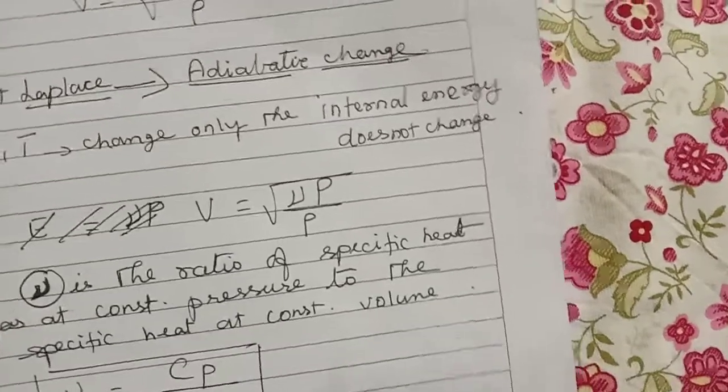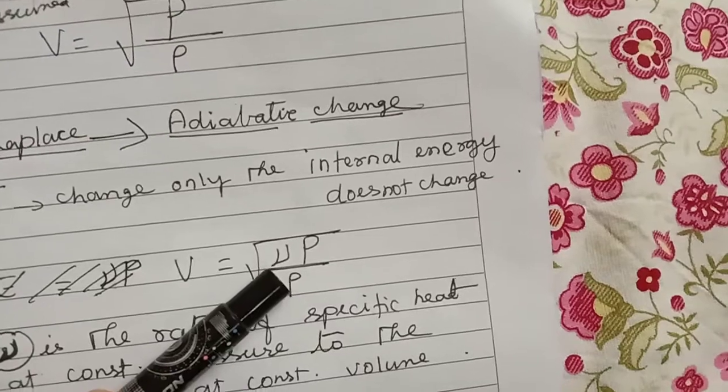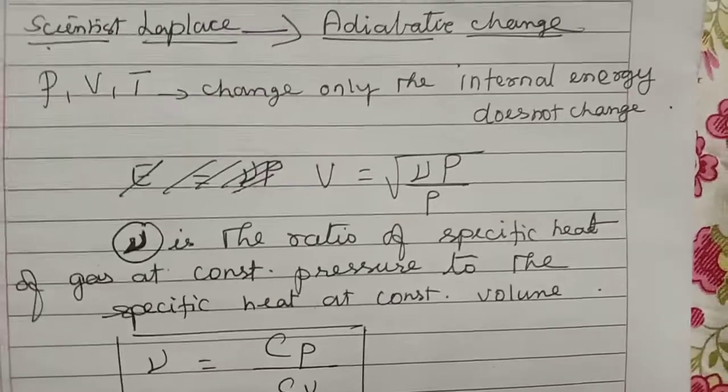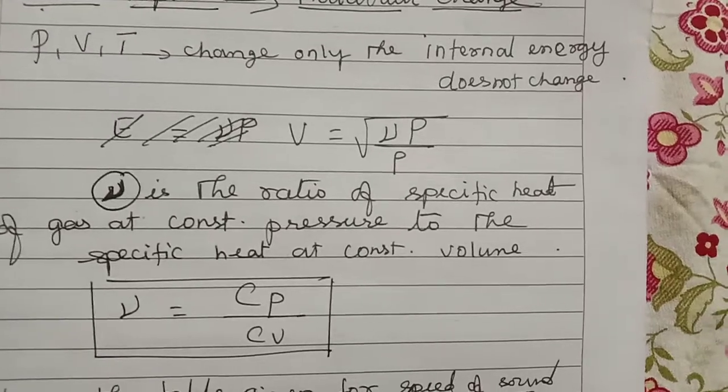Based on that he has given the formula: V equals square root of gamma P by rho, where gamma is the ratio of specific heat of gas at constant pressure to the specific heat at constant volume.